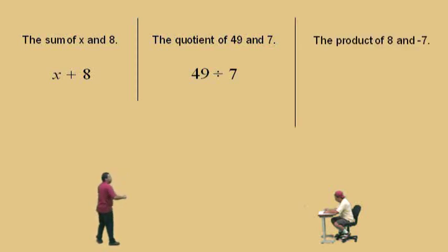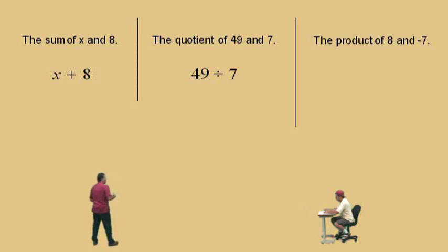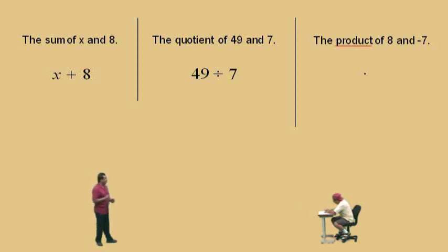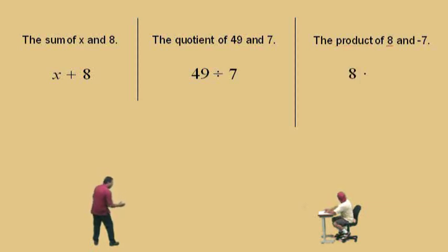We just want to write the math statement. Here goes another one — this is the product. What does 'product' mean, Charlie? Multiplication — very nice. There are different ways of noting a multiplication problem. Here we're going to use the little dot, though you could use the little x. The dot means the product. What are the two things we're taking the product of? 8 and negative 7.